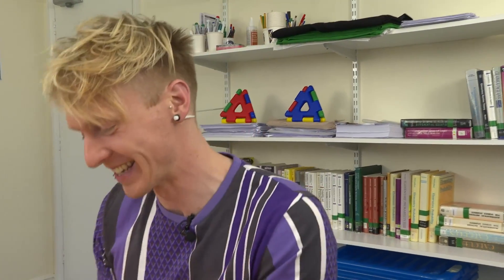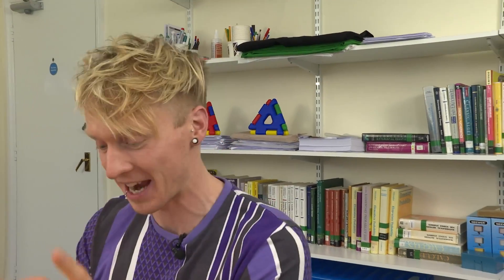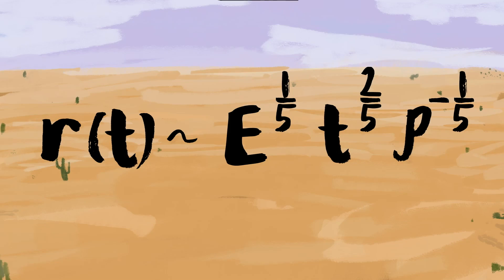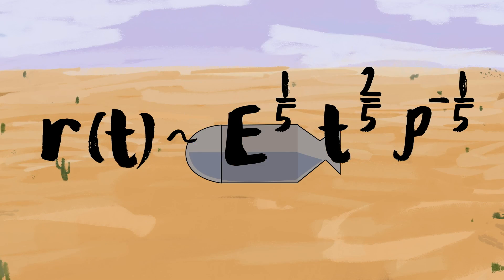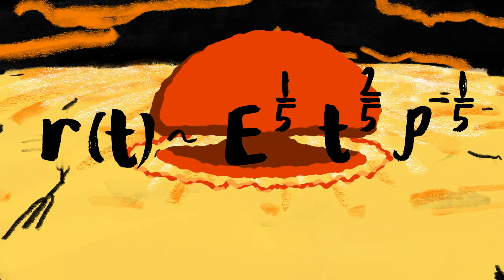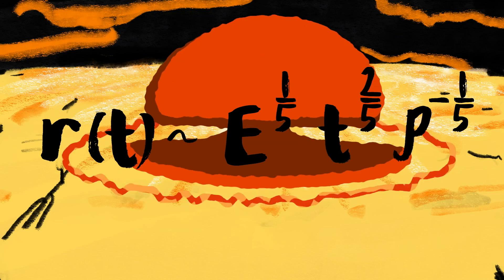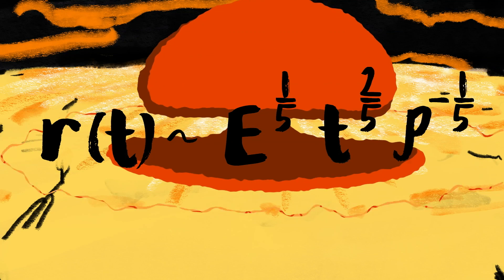Given he didn't have access to highly classified US military secrets, being able to get within 10% accuracy the size of the bomb dropped in that first ever nuclear test is pretty good. And this isn't going to help you build an atomic bomb — it's just going to give you an idea of how devastating they could be.